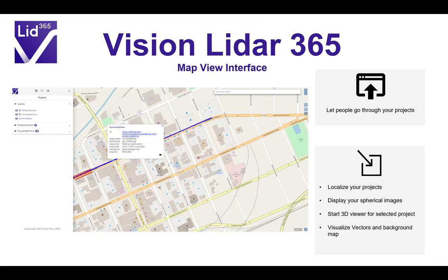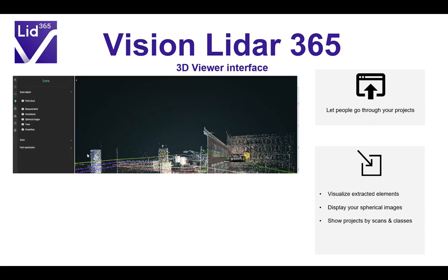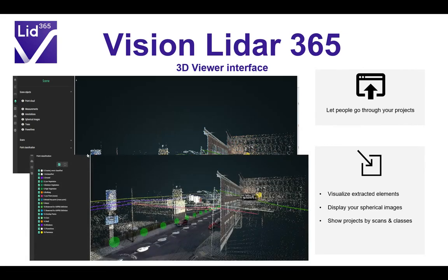In the map interface, clients will be able to localize their project on the map, display vectors, and view spherical images. If they want to see the point cloud, they will have the possibility to launch the 3D viewer by simply clicking the URL link provided within the project. The 3D viewer lets your clients navigate through the project and visualize all the work you have done. They have access to all extracted elements — such as trees or power lines — any vectors, and they can display the point cloud by class and scan. If your point cloud is already classified, they can turn individual classes on and off.